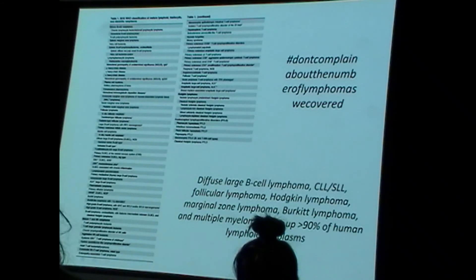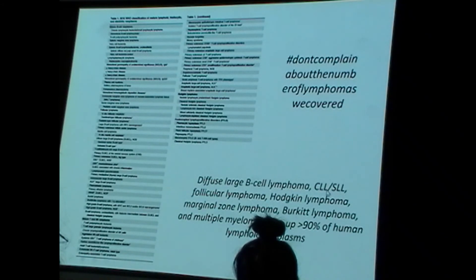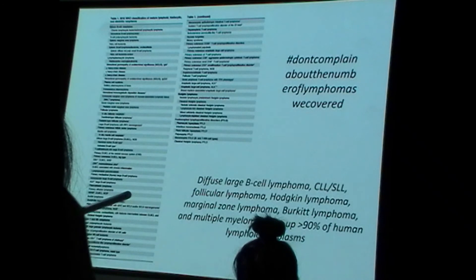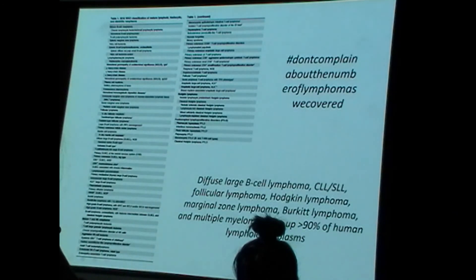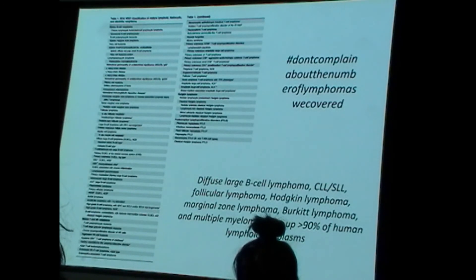The lymphomas we've covered — diffuse large B-cell lymphoma, CLL/SLL, follicular lymphoma, Hodgkin lymphoma, marginal zone lymphoma, Burkitt lymphoma, and multiple myeloma — make up over 90% of all lymphomas. So if you know these well, you've got 90% of this covered.